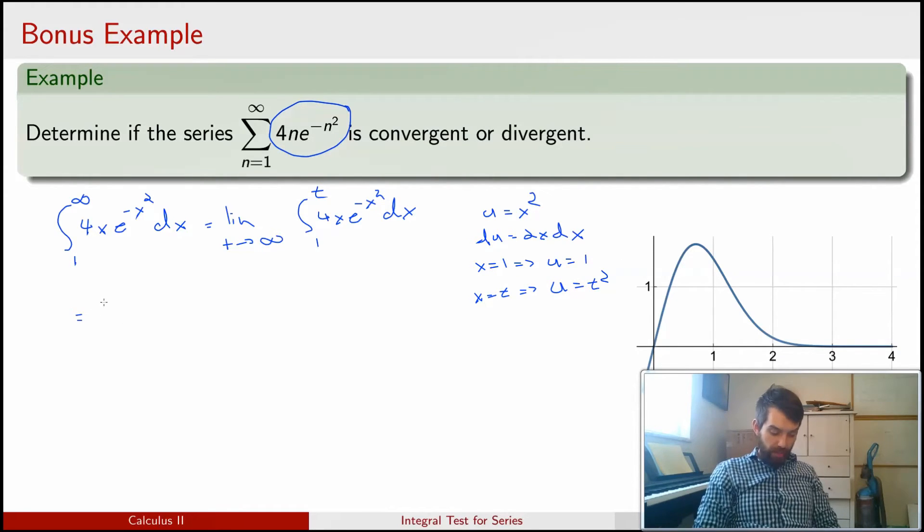So I can replace this entire thing. This is just the limit as t goes to infinity of the integral from 1 up to t squared. I have a 4x, so this is 2 times the integral of e to the minus u du.